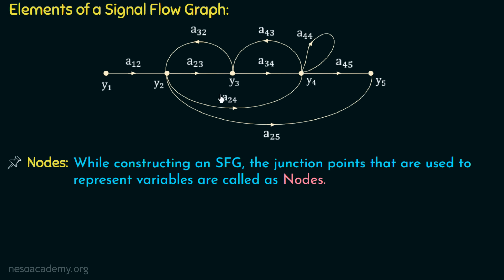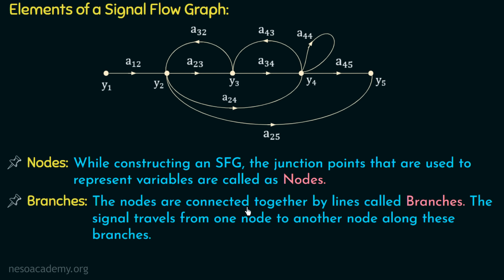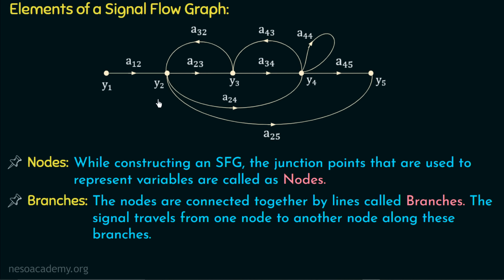Moving on to the next element: branches. The nodes are connected together by lines called branches. The signal travels from one node to another along these branches. We can see that these 5 nodes are connected together with lines, and all these lines are called branches. For example, node Y1 is connected with node Y2 via one branch. Similarly, all nodes are connected with each other via branches.